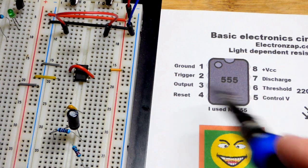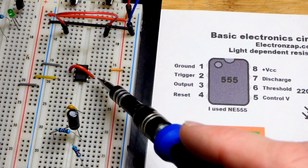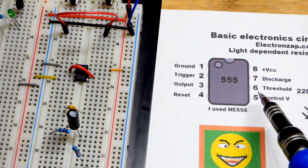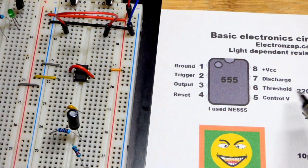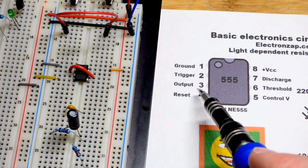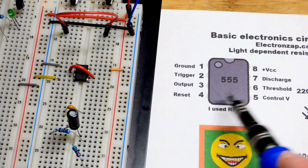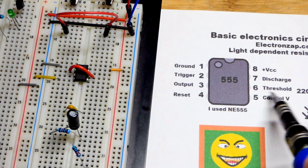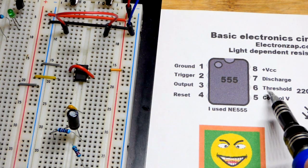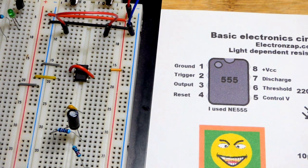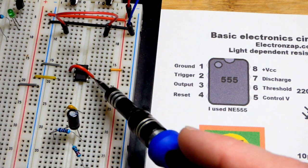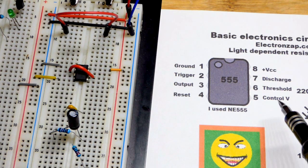The trigger and threshold pin you can see a jumper right there. Pin 2 to pin 6. They both monitor the voltage of a capacitor in this point and determine the output. So one third power supply voltage. The trigger jumps into action. Two thirds the threshold pin jumps into action where they change the state of the output. And so that is why we have that jumper there.